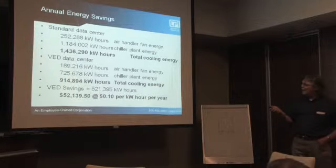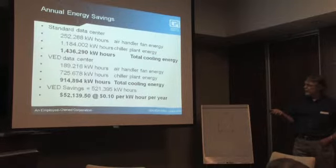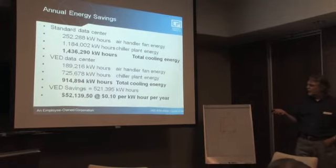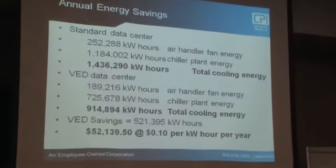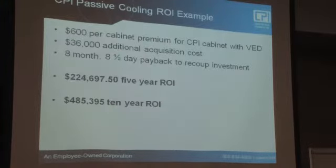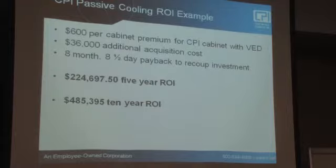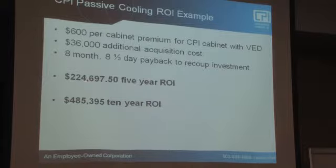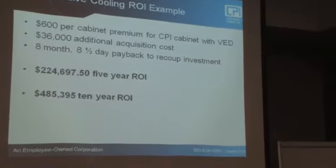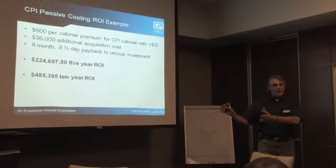The standard data center total energy is 1,400,000 kWh versus the VED data center at 914,000 kWh — saving $52,000 per year at 10 cents per kWh. Using a $600 price delta versus a non-chimney solution gives an extra $36,000 in acquisition cost, which pays back in about eight and a half months. Over five years the ROI is $224,000, and over ten years it's $485,000.